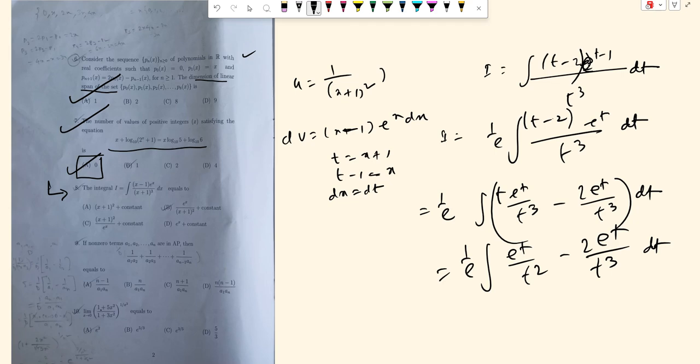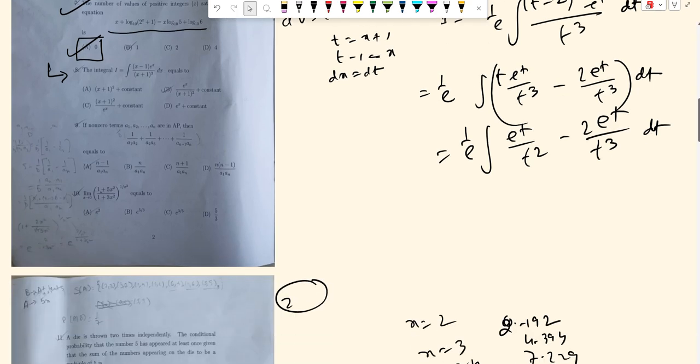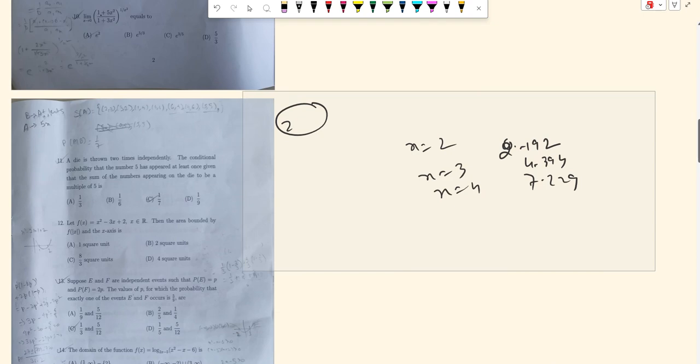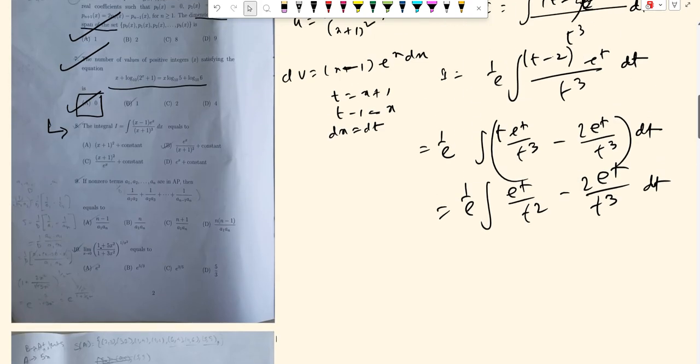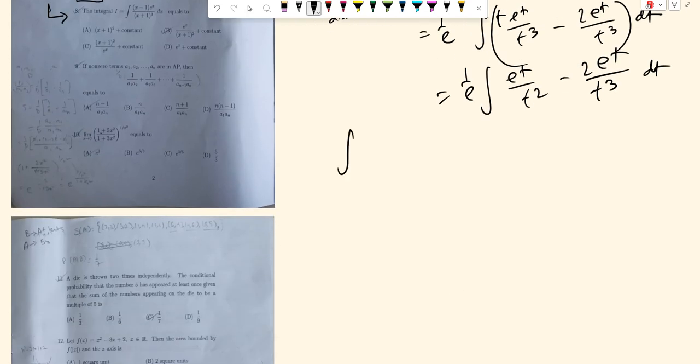Now integrate separately. For the integral of e^t over t squared dt, we can use integration by parts. Let u equal 1 over t squared.